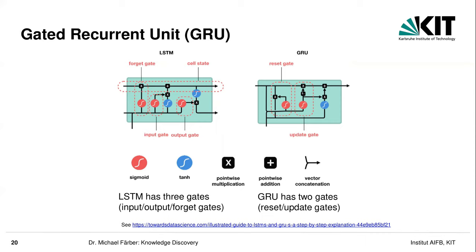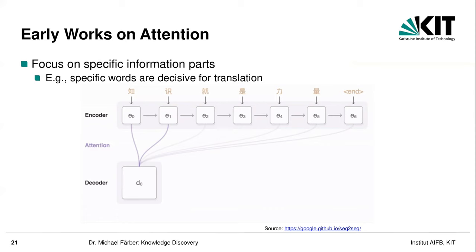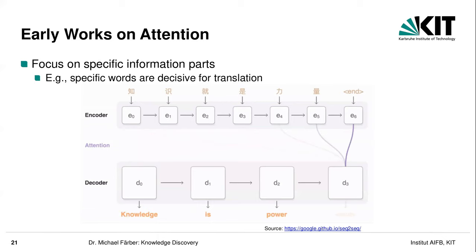There have been some early works on attention around 2000–2010, focusing on the encoder-decoder architecture. The encoder encodes the input — for example, a sentence in Chinese — and the goal is to output an English sentence. The idea of attention is that at each decoder step, you look at all encoder states. The neural network learns that in some cases it should focus mainly on encoder states E_0 or E_1, and in others at the end. Being flexible and having different weights between encoder and decoder — that is basically attention.